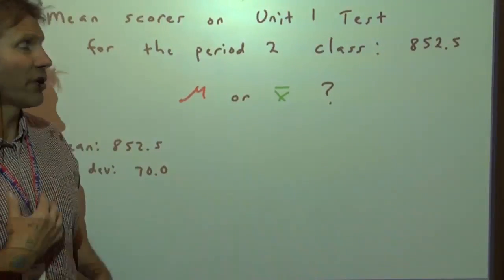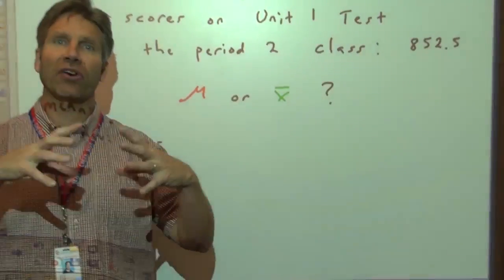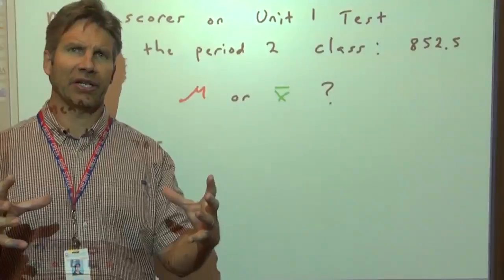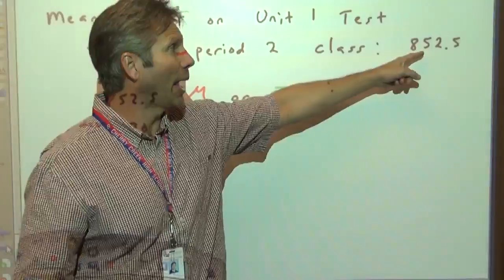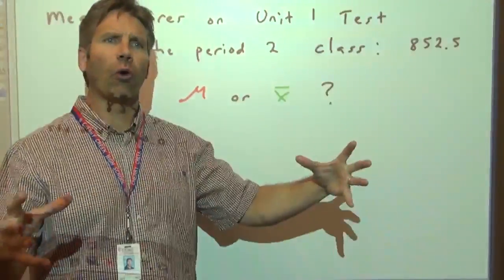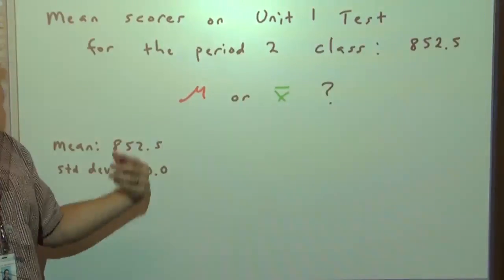If we're going to consider if all we're interested in is the Period 2 class, then that's our universe, that's our whole population. And if all the kids in that class took the test, then we're done. That's a population mean. That's the mean for this whole population of interest. So that would be mu, it would be a population mean.